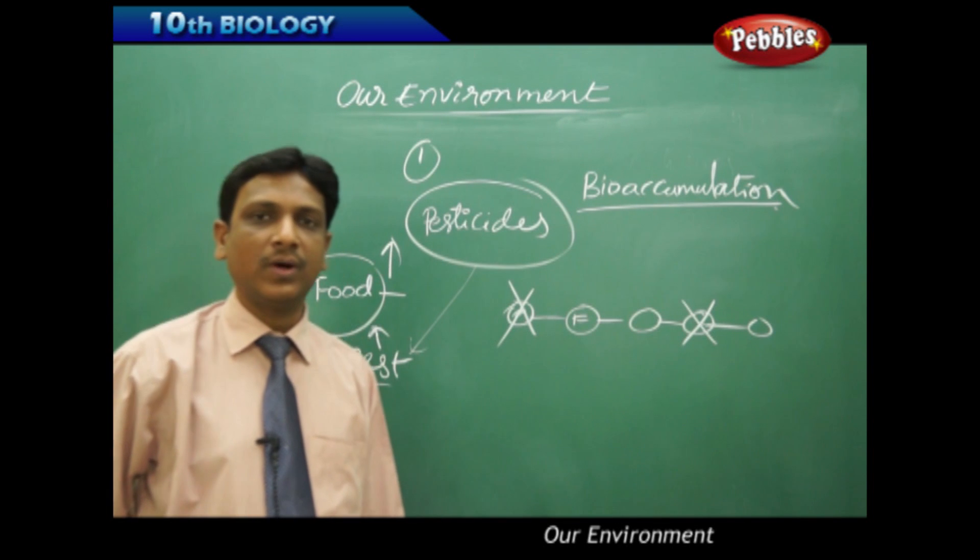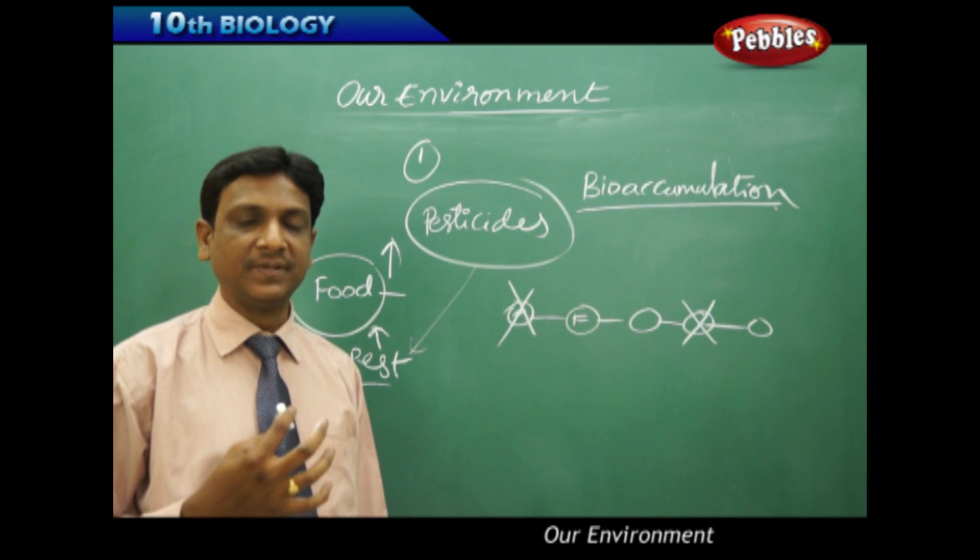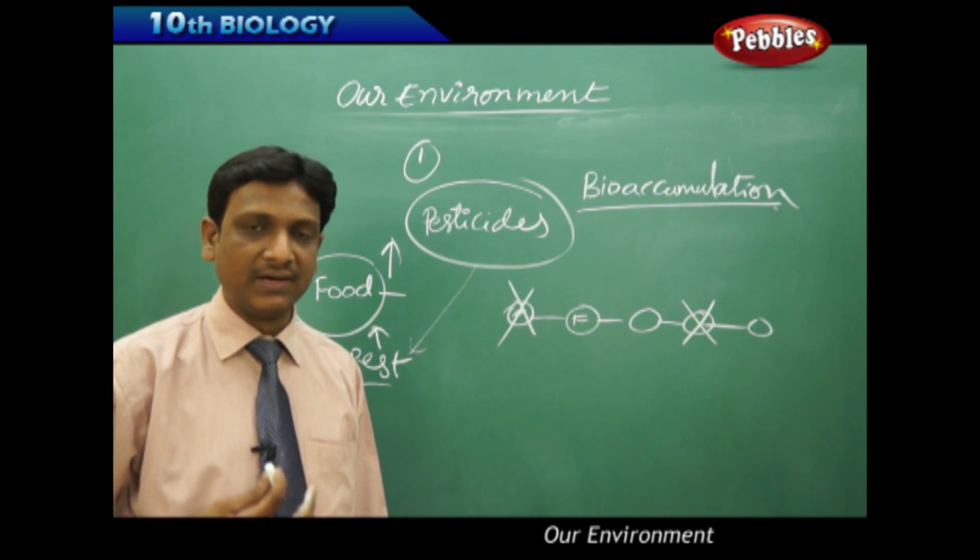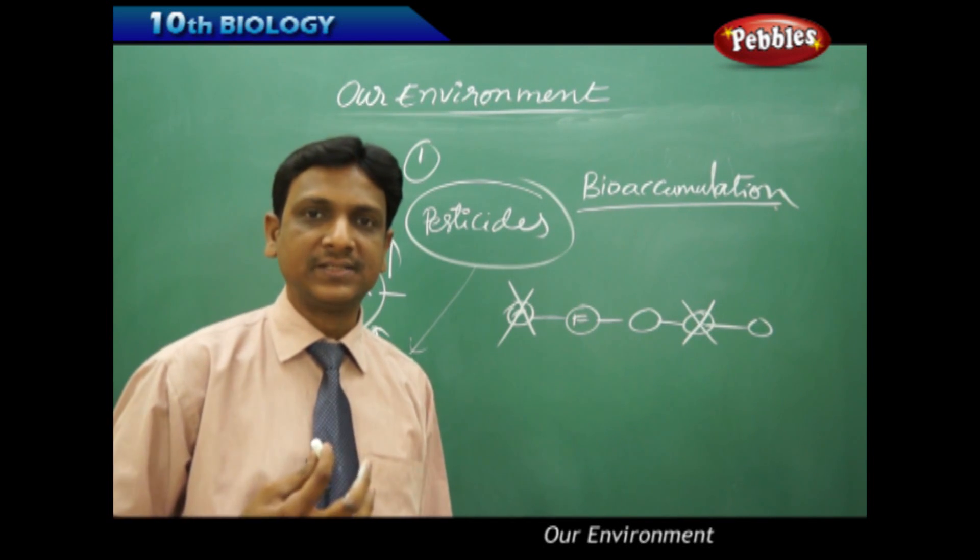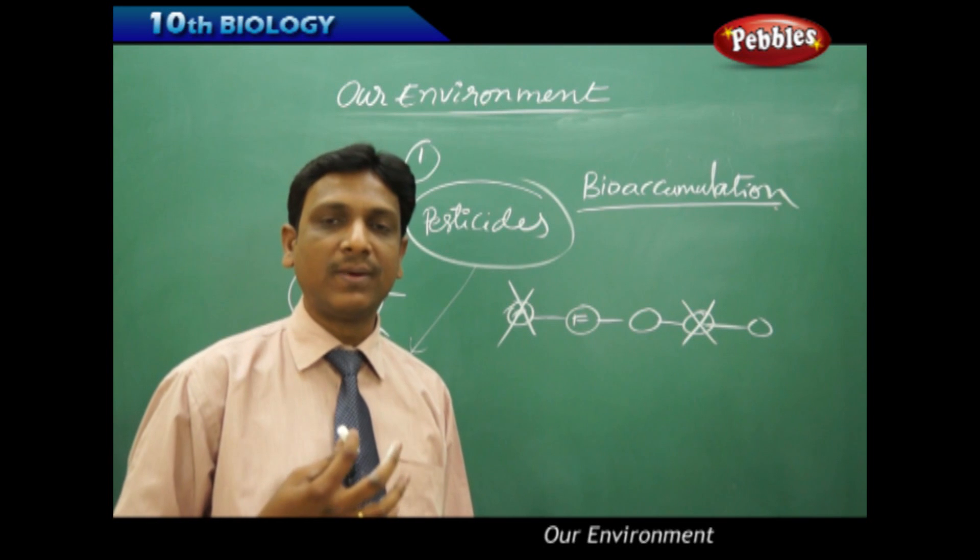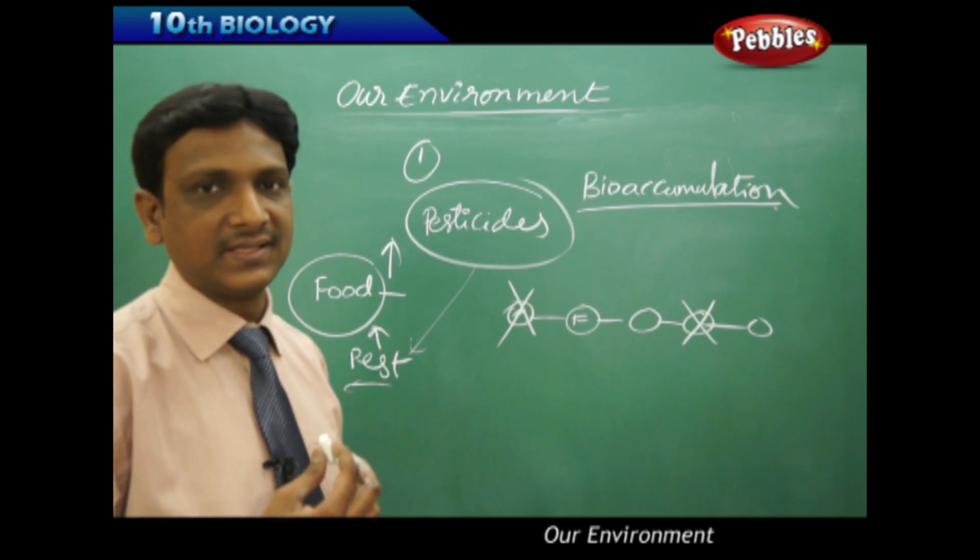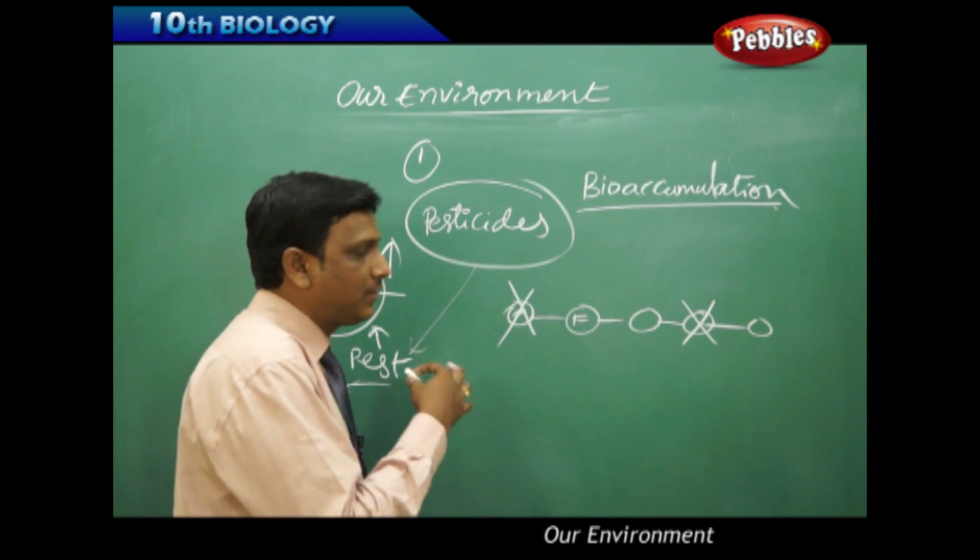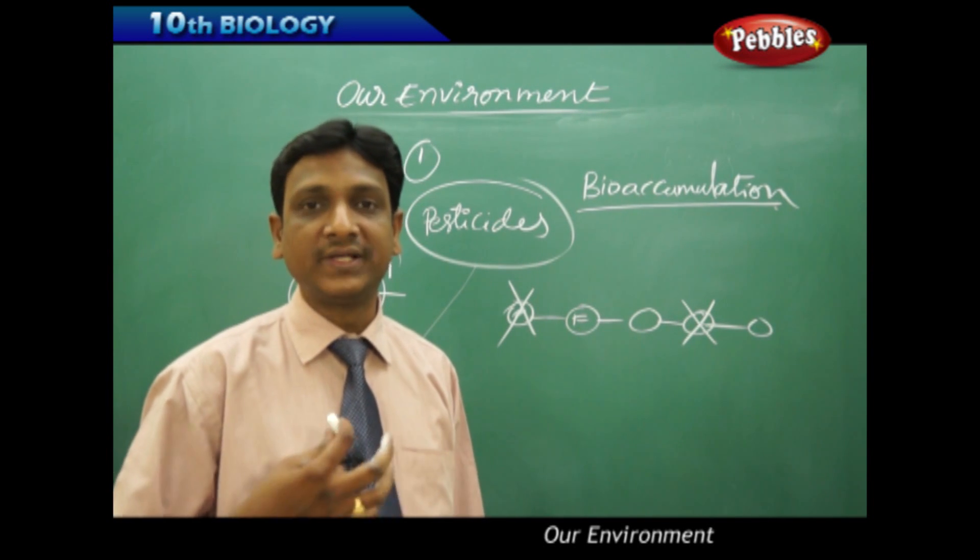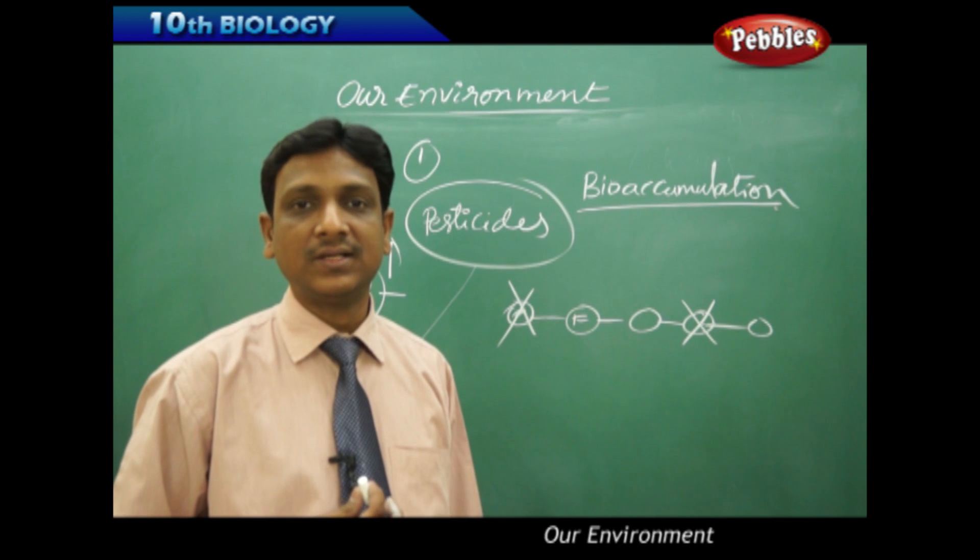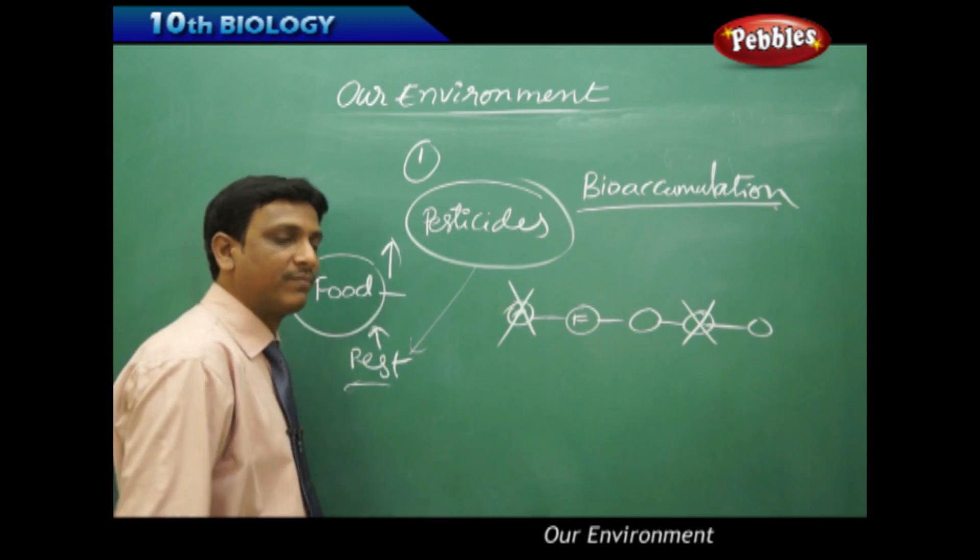This is called bioaccumulation because these pesticides that enter our bodies cannot be disposed of. Other toxic materials can be detoxified by our liver and kidneys to some extent and excreted, but our kidneys and liver cannot totally detoxify these pesticides. They accumulate in our body, are not disposed of, and show their bad effects on the body. This is very dangerous and happens because of excessive use of pesticides.